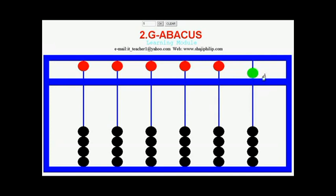For setting 6, we have to move both beads from heaven and earth. Move the heaven bead down to set 5 and one earth bead up to set 1. Totally, we will have the value 5 plus 1, which is 6.